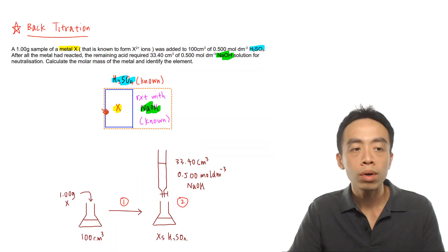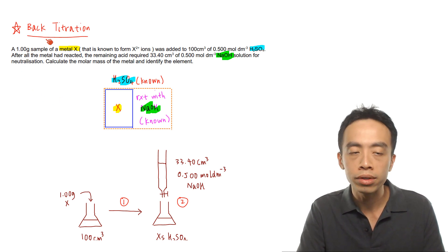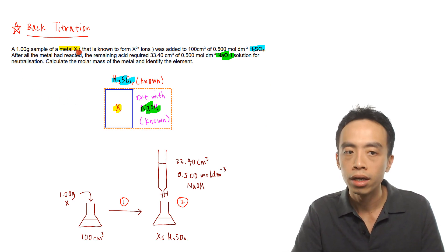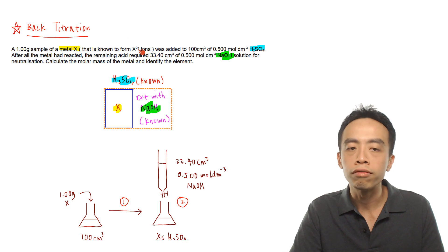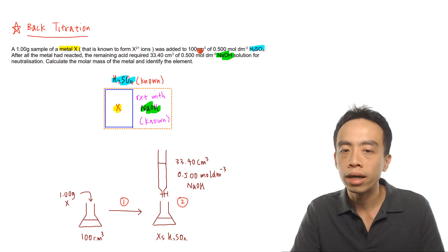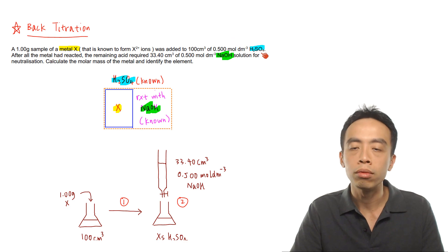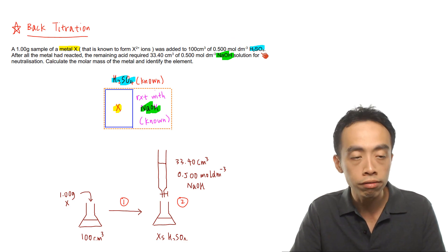It is a lot easier for us to explain back titration using an example, so let's take a look at this exercise. We have a 1.00 g sample of a metal X, which is known to form X²⁺ ions, which was added to 100 cm³ of 0.5 mol per dm³ of H₂SO₄.